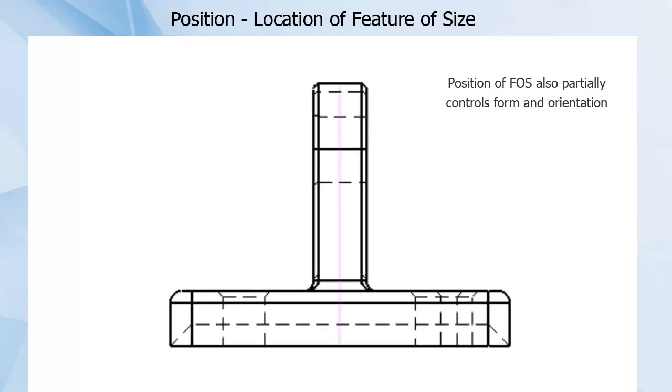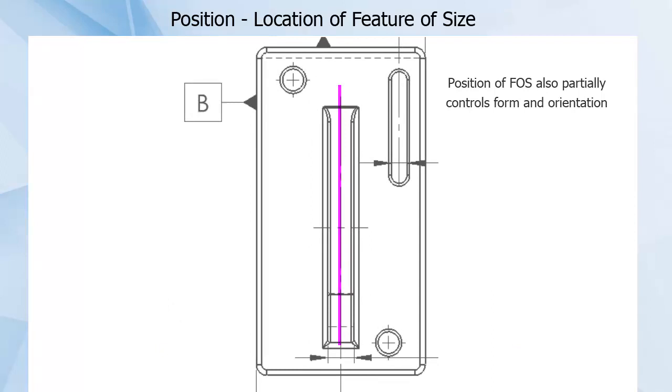The tab of this part must be relatively flat or unbent, relatively perpendicular to datum feature A, and relatively parallel to datum feature B in order to meet this position callout.